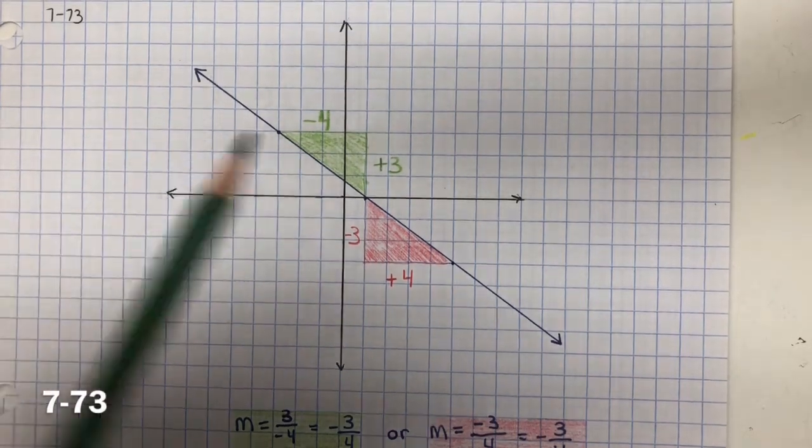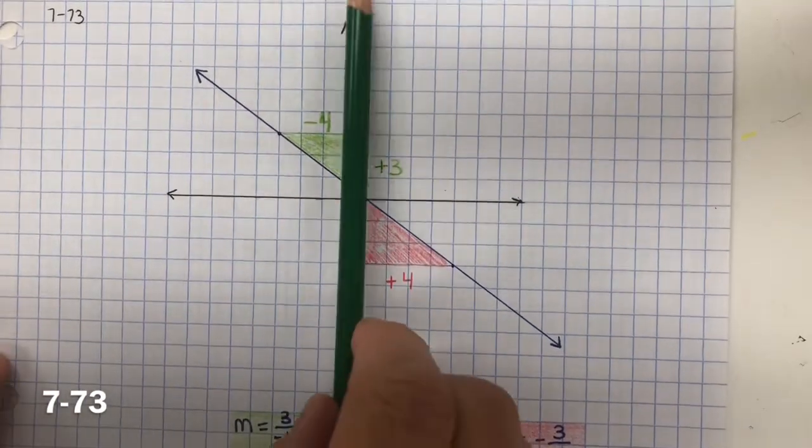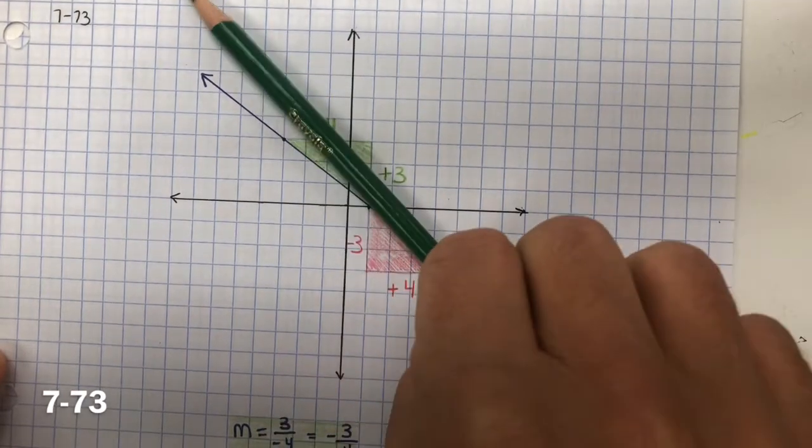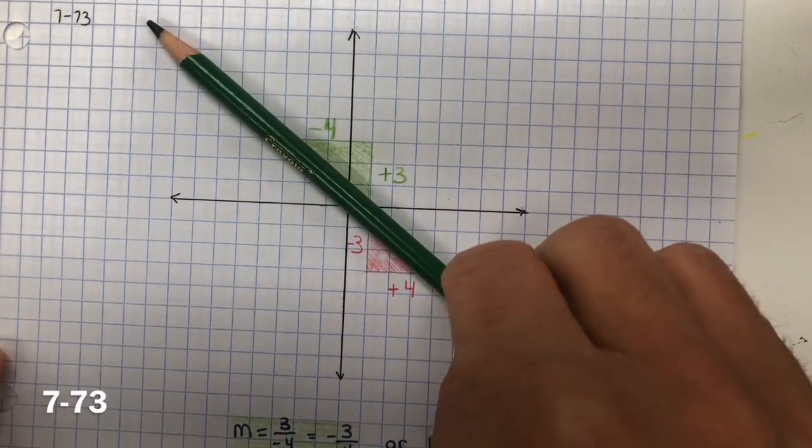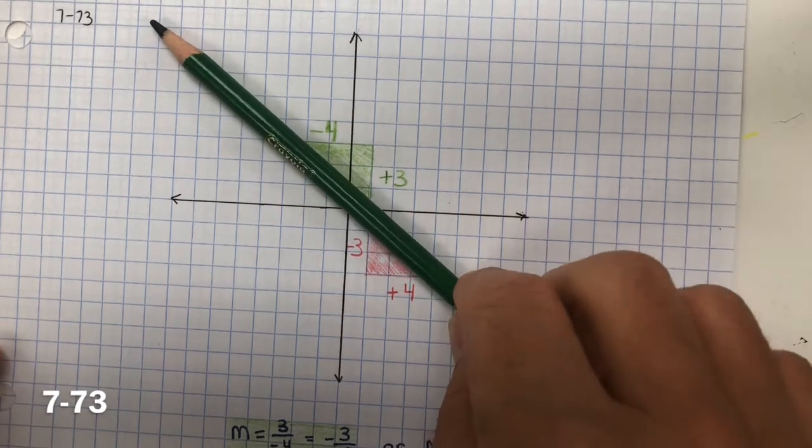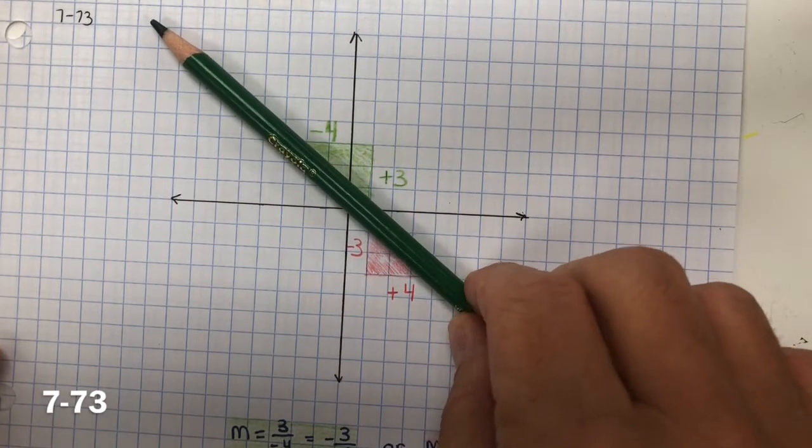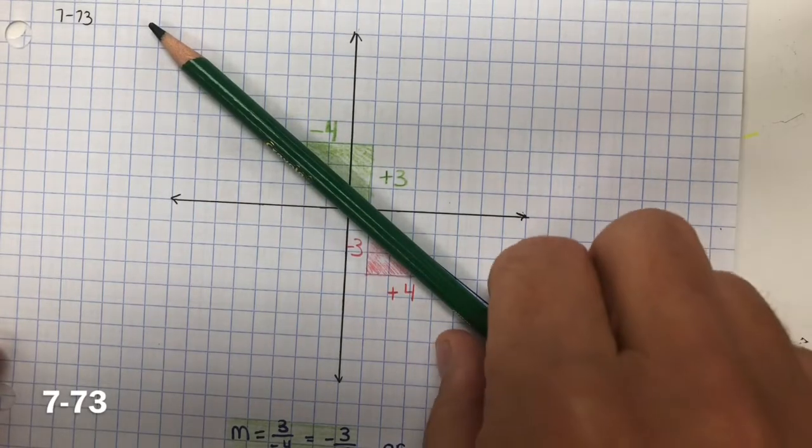Just looking at the line, it's sloping towards the negative x's. So we know this is a negative slope. So we can eliminate positive 3 fourths and positive 4 thirds.